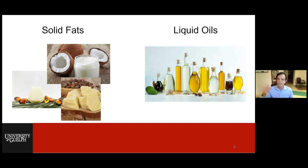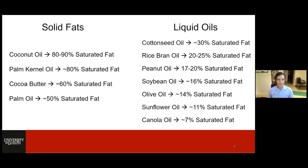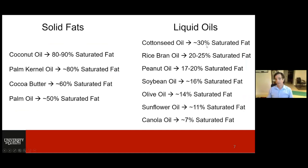Here's an example of solid fats versus liquid oils and their saturated fat content, so you don't think a liquid oil is completely unsaturated. Coconut oil is 80 to 90% saturated. Palm kernel oil is 80%. Cocoa butter about 60%. Palm oil about 50% saturated fat. Surprisingly, cottonseed oil is 30% saturated fat. Canola oil is about 7% saturated fat. Soybean oil is 16% saturated fat. Peanut oil and rice bran oils are in between. So there's a variety of saturated fat contents even in liquid oils.